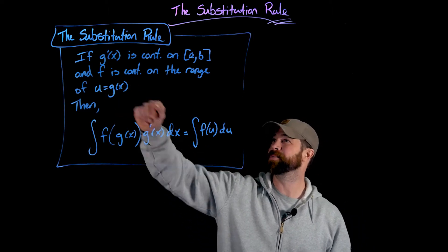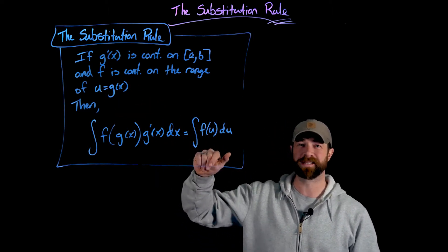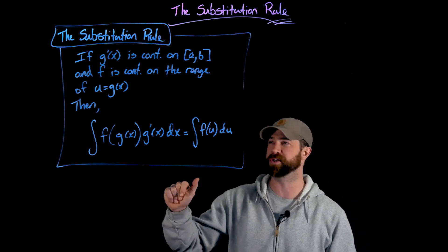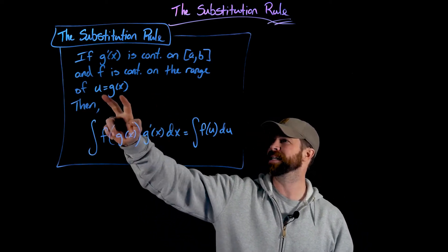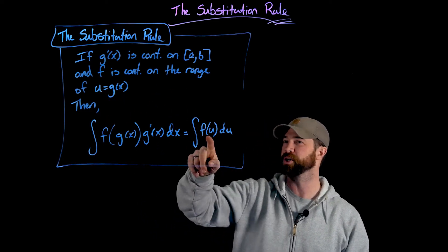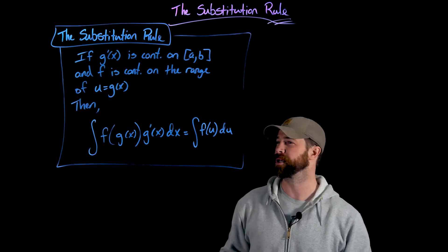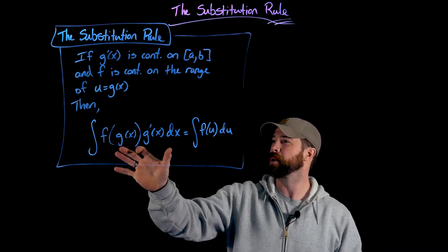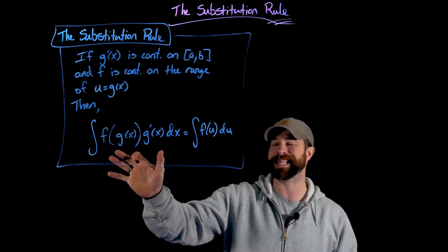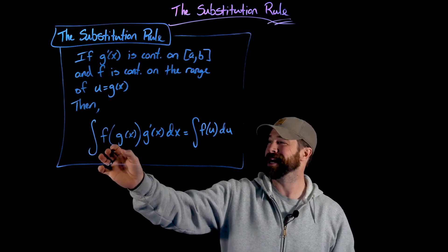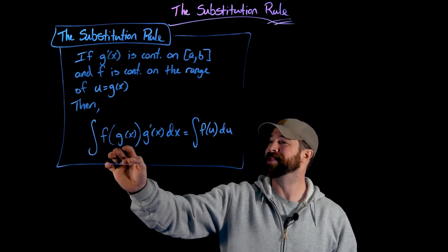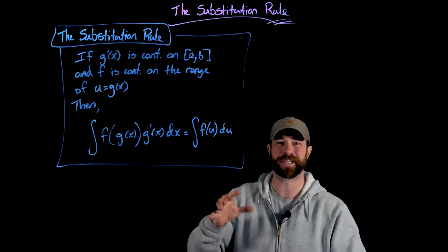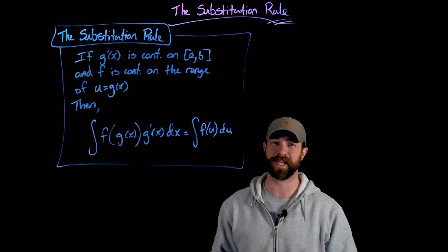The setup requires that g prime of x is continuous, and f has to be continuous on the outputs of the g of x function. We define g of x to be the u that shows up in the equation. What we're integrating looks like a composition — f composed of g — multiplied by the g prime of x function. You can see the bits of the chain rule here.